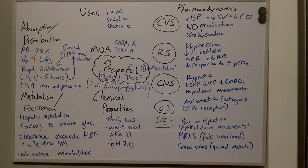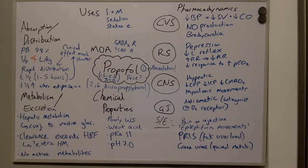For the metabolism and excretion, propofol undergoes hepatic metabolism and is conjugated to inactive glucuronide. The clearance of propofol exceeds hepatic blood flow, which would suggest there is extra-hepatic metabolism. There are no active metabolites of propofol.